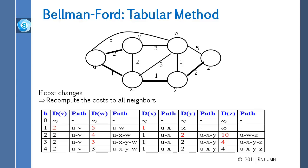Student asks whether Bellman-Ford and Dijkstra give the same answer — yes, they give the same result. This table is calculated for node U only. If you want to do the same for node X, you start all over. This is the shortest distance from a single source to all nodes, and every node has to do this calculation by itself.